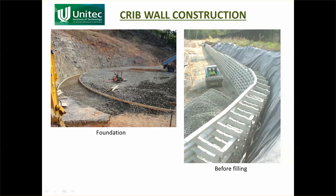Once all the crib blocks are in place, you fill them up with gravel or scoria, which can be done with a small loader. When the wall gets quite high — up to 5 or 6 metres — you need a large digger or a ramp to allow the loader to reach that level, removing the ramp as you go.